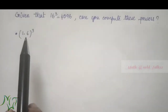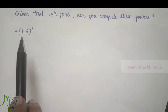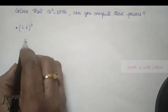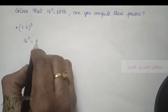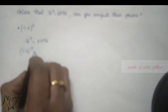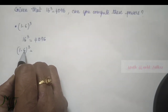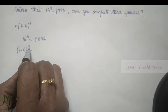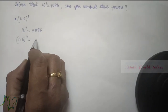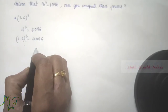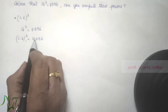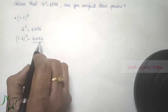16 cube is given as 4096, and we can find 1.6 whole cube easily with this. 1.6 whole cube — here we have 1 decimal place and the power is 3, so there should be 3 decimal places. Using 4096, we move the point 3 places from the right: one, two, three — put the point here. The final answer is 4.096.